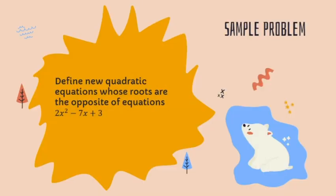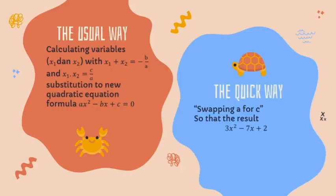And the last example problem: specify a new quadratic equation whose roots are the reciprocals of the roots of the equation 2x² − 7x + 3 = 0. For the usual way, calculate x₁ + x₂ = −b/a and x₁ · x₂ = c/a, then substitute into the new quadratic equation formula ax² − bx + c = 0, giving the result: 3x² − 7x + 2 = 0. For the quick way, swap a and c, so the result is 3x² − 7x + 2 = 0.